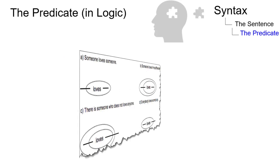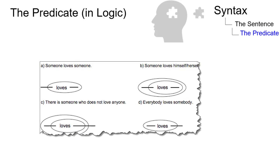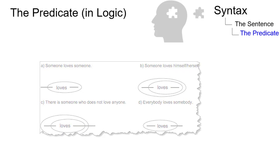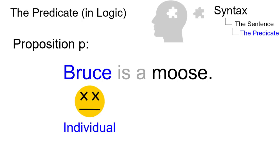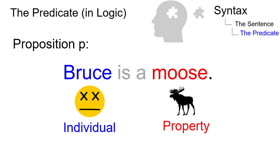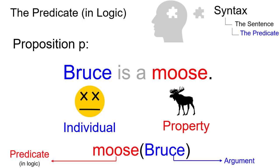In logic, the term predicate is used to describe the logical relations within a sentence. The proposition P, 'Bruce is a moose', states something about an individual — in this case the individual Bruce — that has the property of being a moose. The sentence predicates something, in this case a property, of an individual.